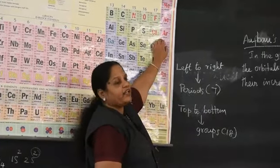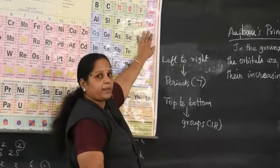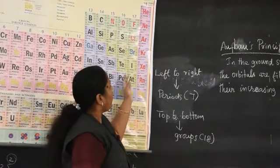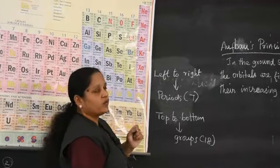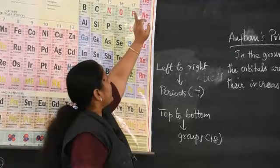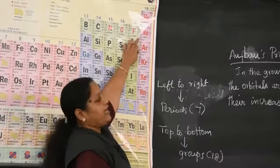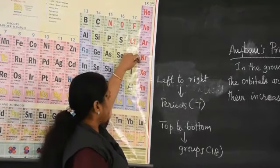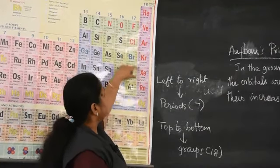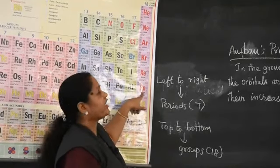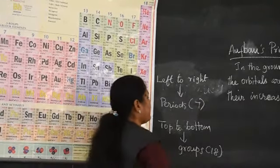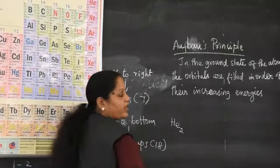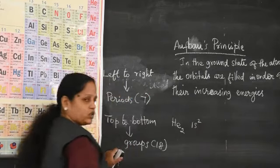Group 18 elements were originally referred to as zero group elements. Why? Because when you write their electronic configuration — except helium — all other elements (neon, argon, krypton, xenon, radon) have completely filled outer shells. Helium has atomic number 2, so its configuration is 1s².